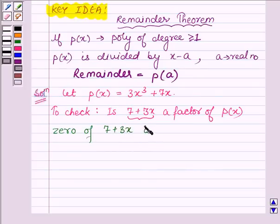minus 7 upon 3, since to find the zero of any linear polynomial we equate it to 0, and upon doing so we get x is equal to minus 7 upon 3.